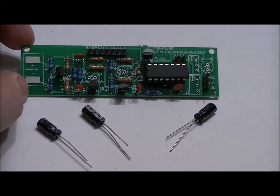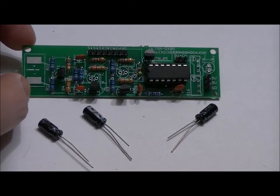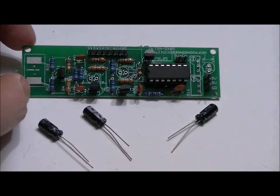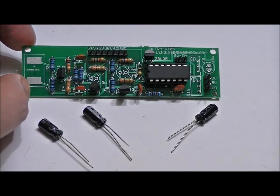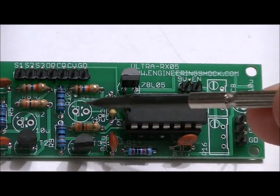There are 3 electrolytic capacitors, 10uF. And they've all got a long lead, which is positive, and a short lead, which is negative. Keep that in mind. Long lead is positive. We've got a slot here, here, and here.